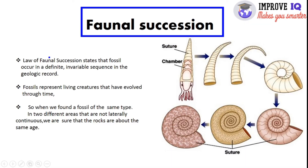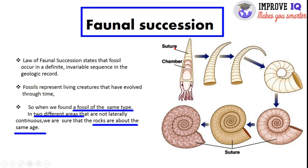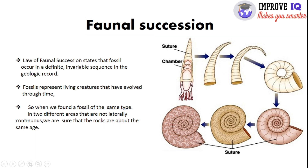The law of faunal succession states that fossils occur in a definite, invariable sequence in the geologic record, and fossils represent living creatures that evolved through time. When a fossil of the same type is found in two different areas that are not laterally continuous, we can be sure the rocks are about the same age. It depicts the inheritance of a fossil or certain creature — if two rocks contain creatures of similar type, the rocks are about the same age.